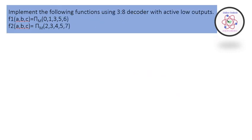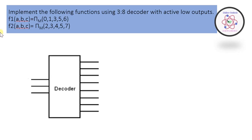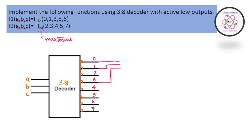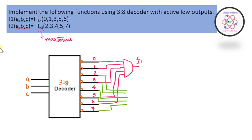The next numerical implements functions using a 3-to-8 decoder with active low outputs, where the functions are given using summation M notation indicating max terms. I place the decoder, mark the input variables, bubble the outputs for active low, and use AND gates. For F1, I combine decimal notations 0, 1, 3, 5, and 6; for F2, I combine 2, 3, 4, 5, and 7.